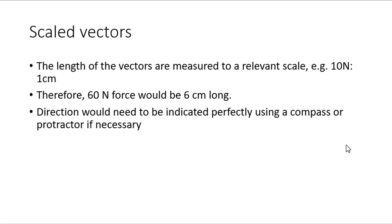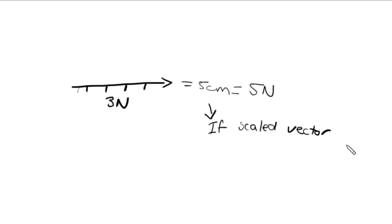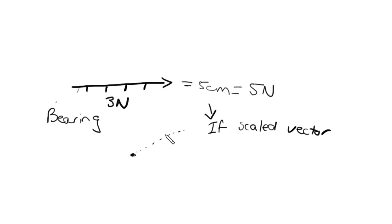So the example: 60 newtons would be 6 centimeters long. These would need to be indicated either using a compass or protractor if necessary. We might have to use bearing when calculating a certain direction, because if you end up going in different directions you need to calculate your bearing because you have angles. This will be explained in a further video when looking at the questions.